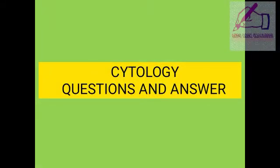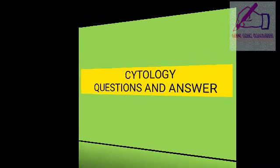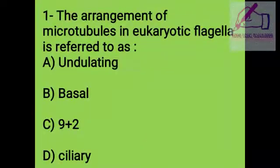In this video, we cover some cytology question and answer. First question: the arrangement of microtubules in eukaryotic flagella is referred to as: A. Undulating, B. Basal, C. 9 plus 2, D. Ciliary. The answer is C, 9 plus 2.